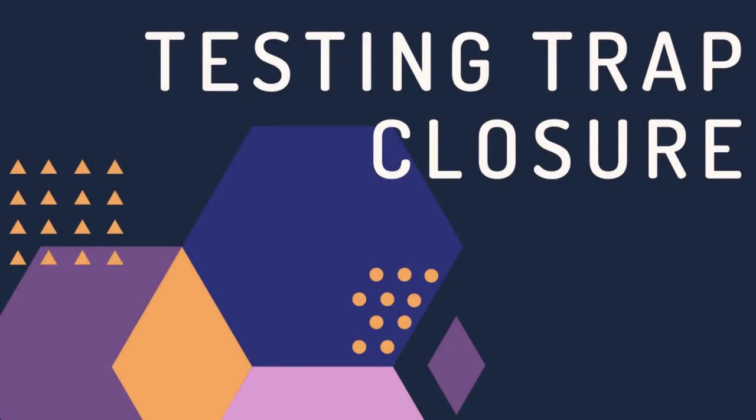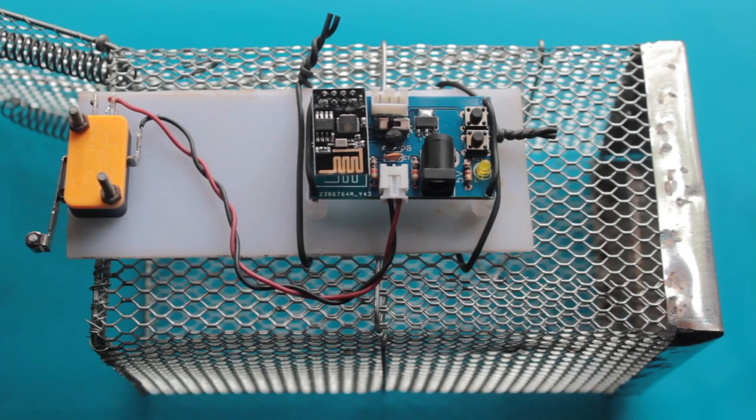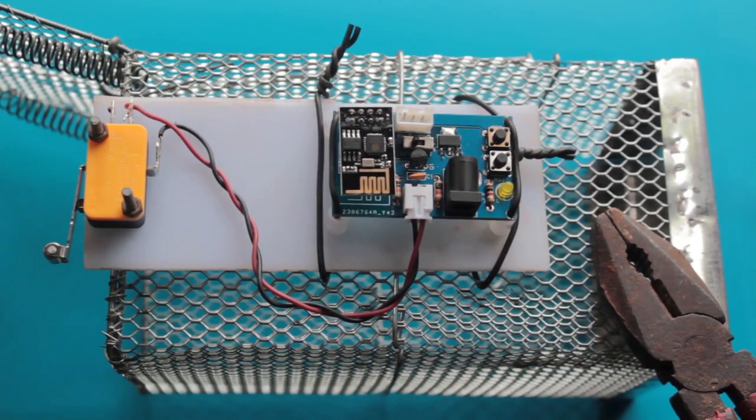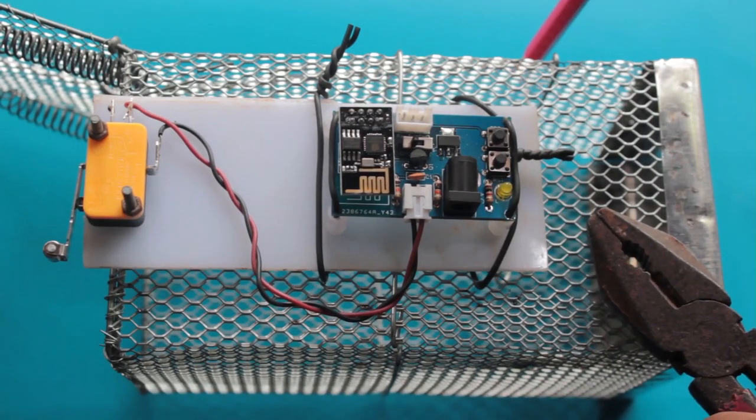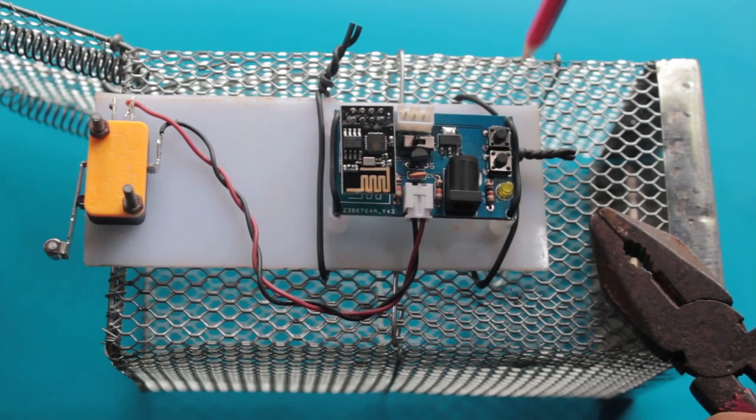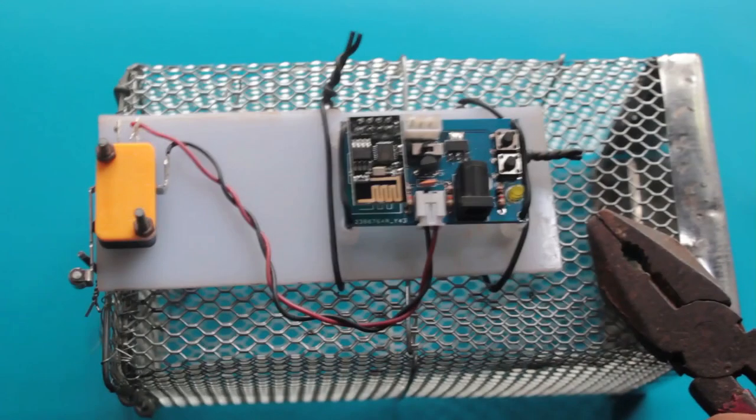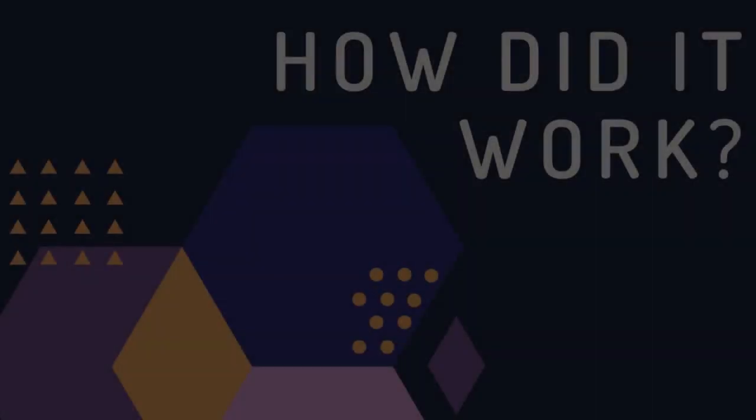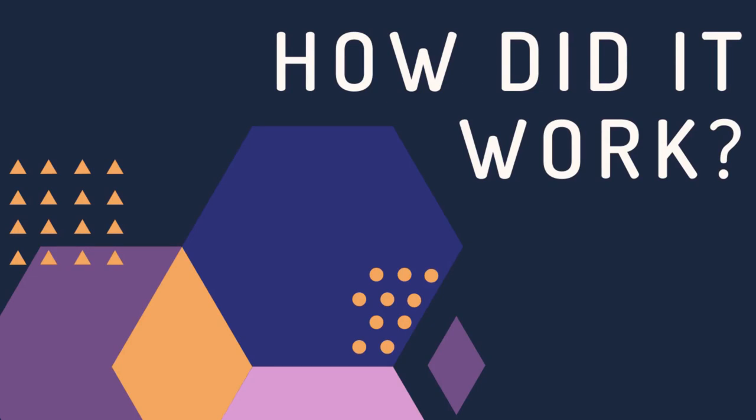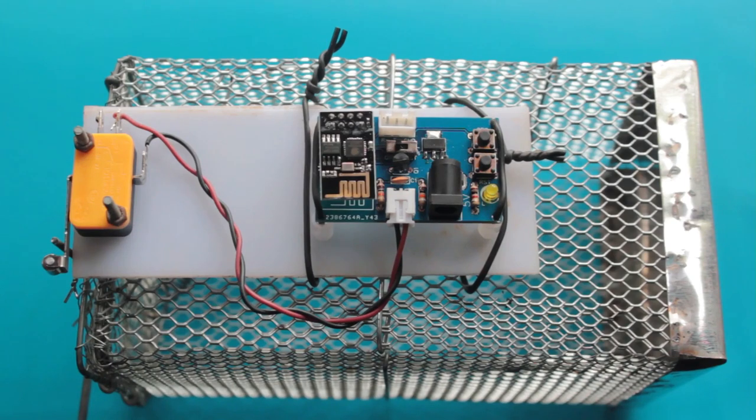Let us go ahead and trigger the mouse trap. I am holding the trap with a plier, just to ensure that I do not get hurt in any way. Using a pencil, I trigger the mouse trap. Here we are seeing it in slow motion. You will notice the spoke on the door ended up pressing the switch lever. This will happen when a mouse gets caught inside the trap.